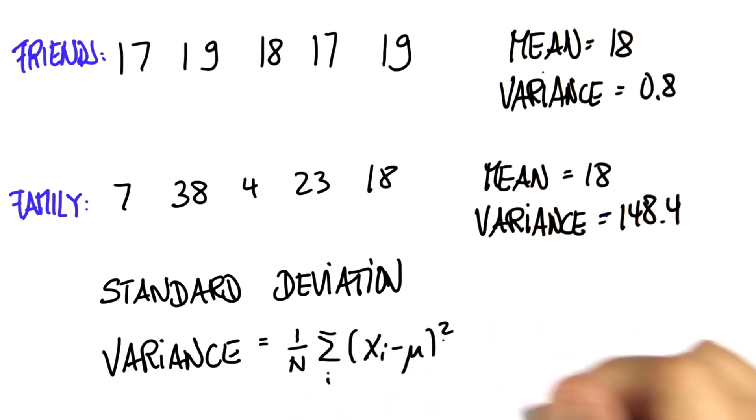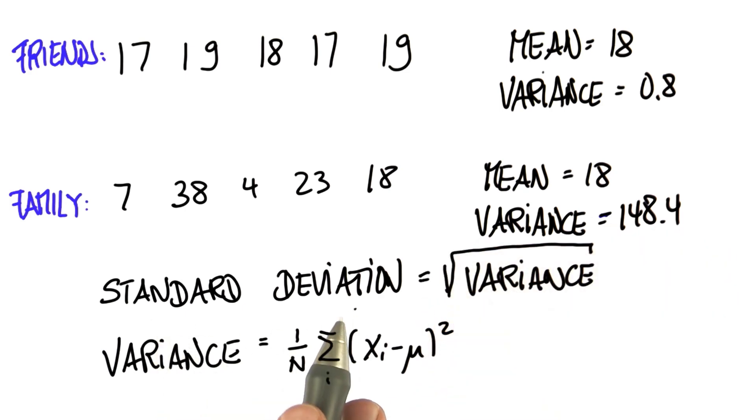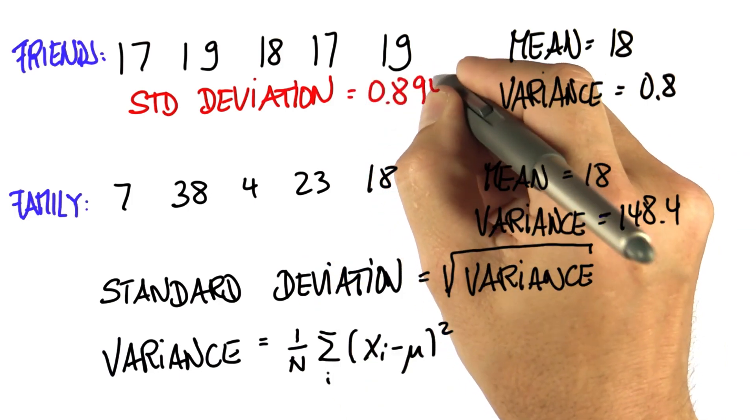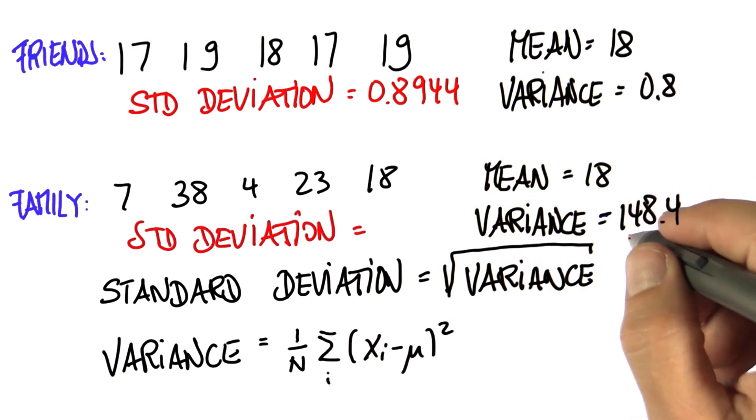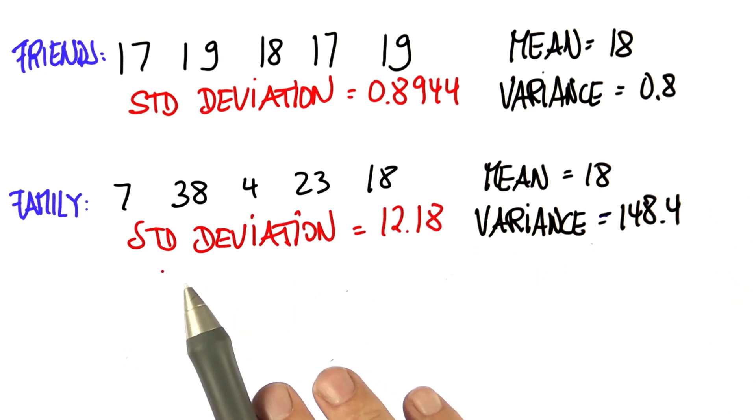If we don't want something quadratic, then we can take the square root of it, and we get what's called the standard deviation. So in the first case, the square root of 0.8 is 0.8944. And in the second case, the square root of 148.4 is about 12.18.